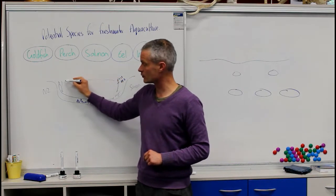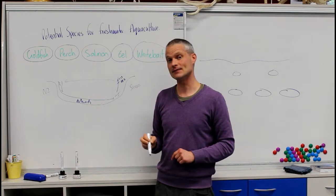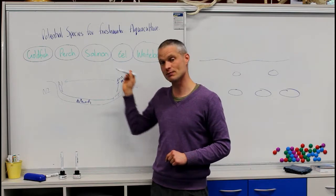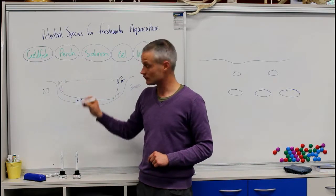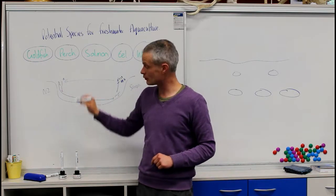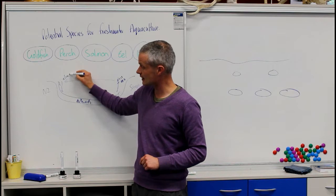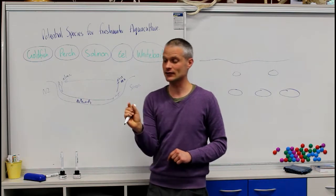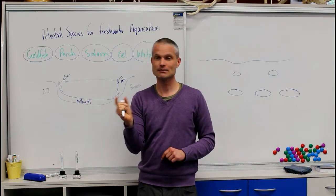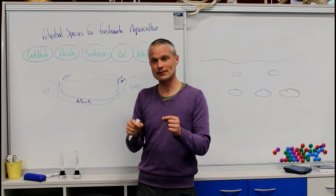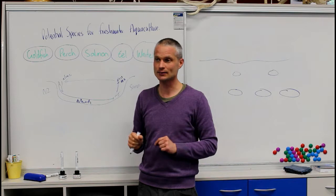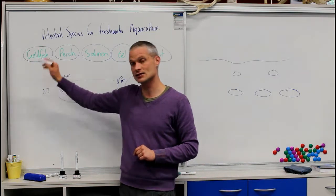So those currents will direct the baby glass eels back towards New Zealand. And then once they get around the shores of New Zealand, they've matured a bit and they're called elvers at this stage. And elvers are just very small miniature adults, so they've got that snake-like shape and they're normally quite dark colored by that stage. And they'll start to then swim up the rivers.